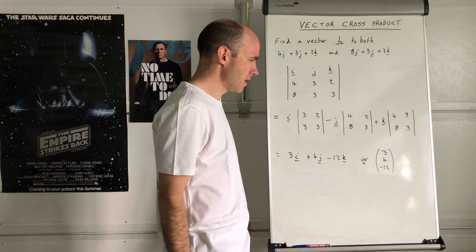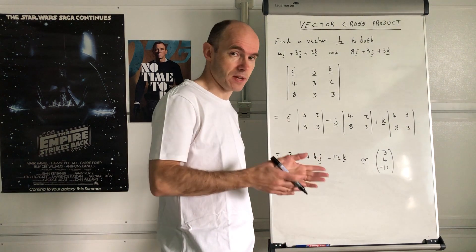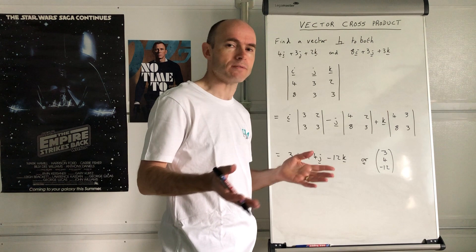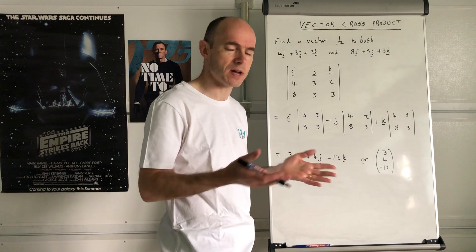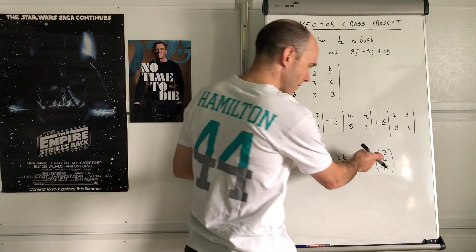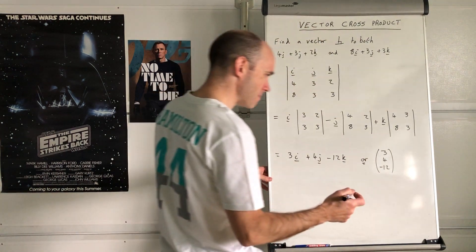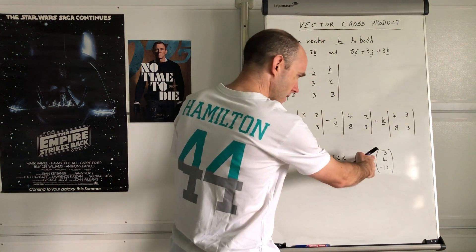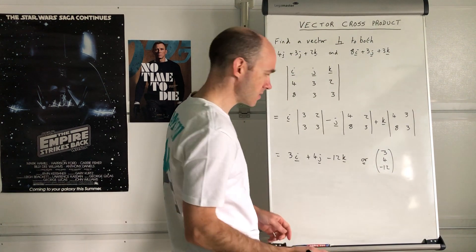In my first video on vector cross product I mentioned a unit vector. Sometimes finding a unit vector is useful. How do you find the unit vector of that? First, you look at the magnitude of that.